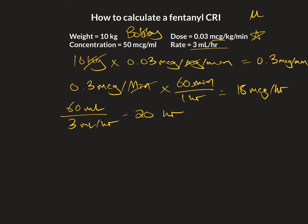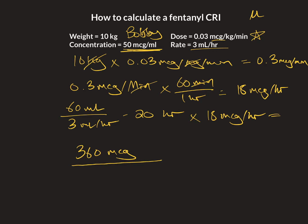So essentially what we need to do is get 20 hours of fentanyl, put it in a syringe, and then fill the rest up with saline. So 20 hours times 18 micrograms per hour leaves us with 360 micrograms. Now that's not entirely helpful, so we need to convert that into mils based on our concentration, which we know up here is 50 micrograms per mil. So you're going to divide by the concentration — micrograms cancel out — and that leaves us with 7.2 mils of fentanyl.